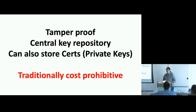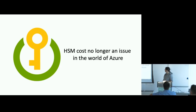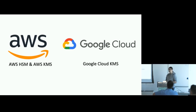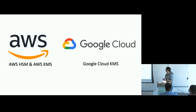The problem with HSMs is they've traditionally been very cost-prohibitive. Companies I've worked at that used them were huge healthcare, pharmaceutical companies, or banks — these devices might cost anywhere from 50 to 80,000 euros per device. But Microsoft have reduced that cost by buying lots of these devices, putting them in their regional data centres, and providing an interface for us to access them. The principles we're discussing apply to any vendor — AWS has its HSM and KMS services, and Google Cloud has its KMS too.